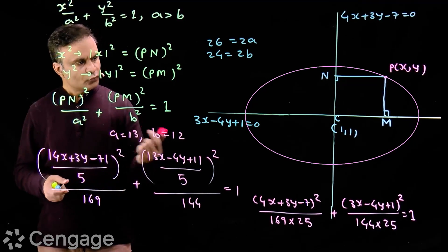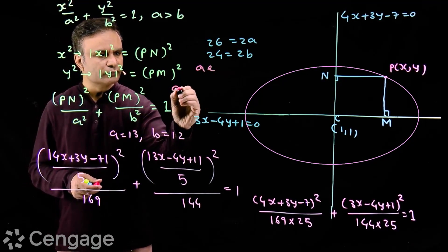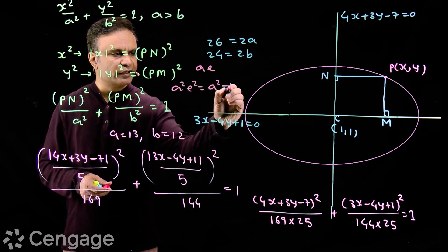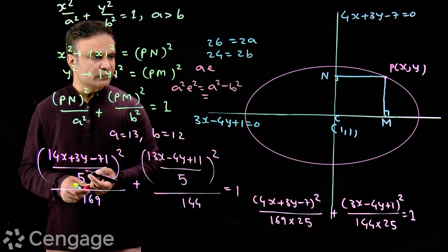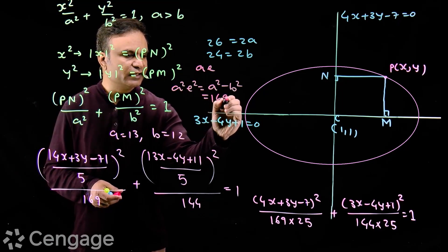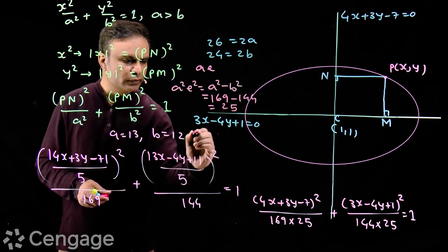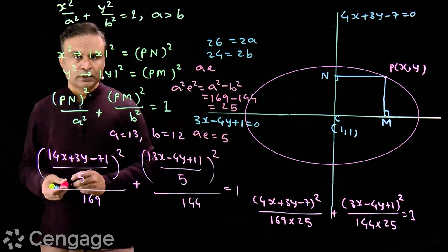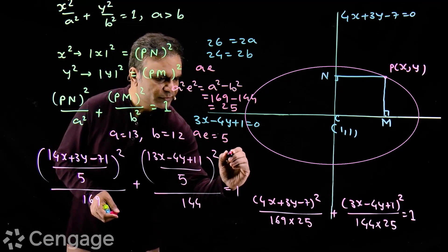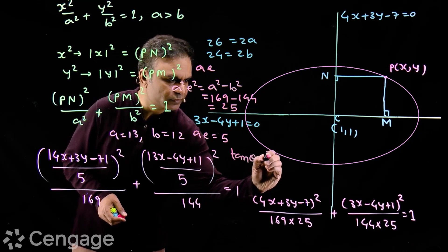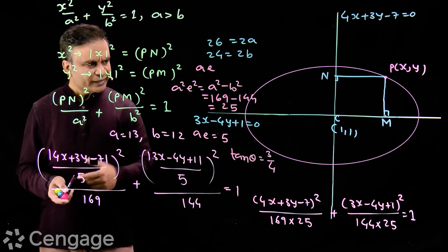Now let's get the coordinates of the foci of this ellipse. Foci are at distance ae from the center. For this ellipse, a²e² = a² − b² = 169 − 144 = 25, so ae = 5. The foci are at distance 5 units from the center along the major axis line, whose slope gives tan θ = 3/4, so cos θ = 4/5 and sin θ = 3/5.